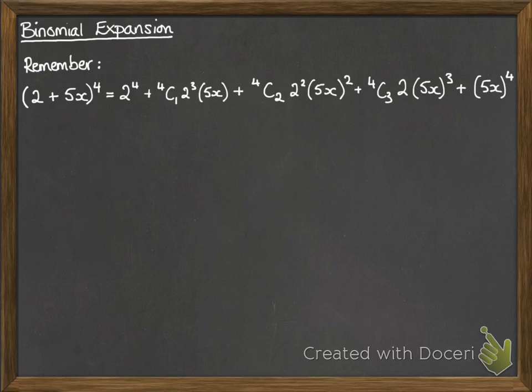Then 4 choose 2, 2 squared, 5x squared, and so on. You just follow that pattern all the way along. You can find a video on that if you can't remember how to do that, just look it up in the AS section of videos.